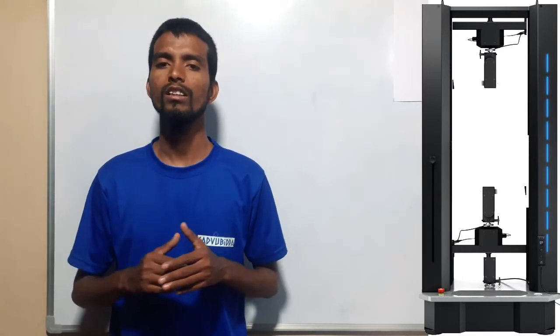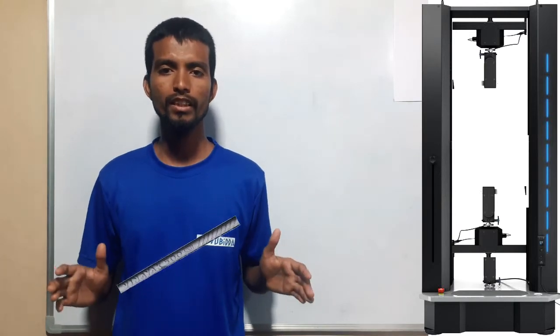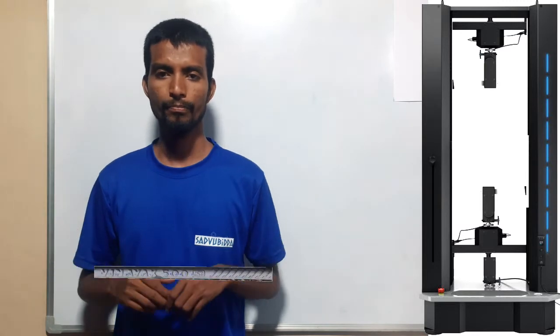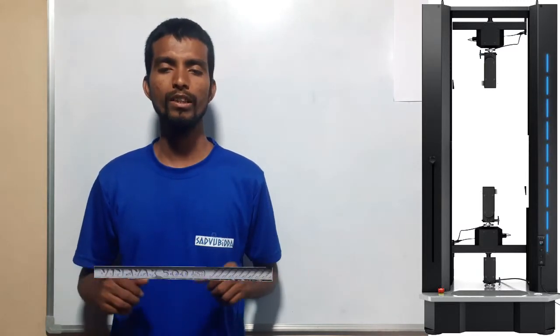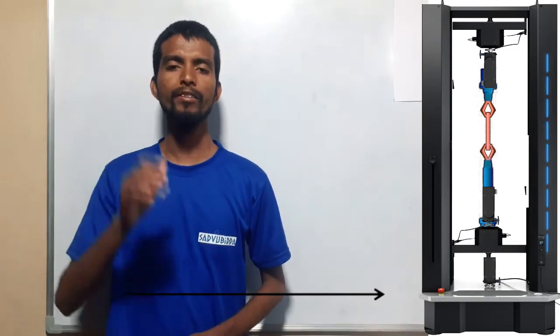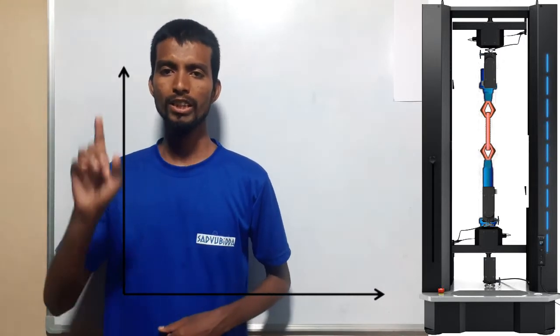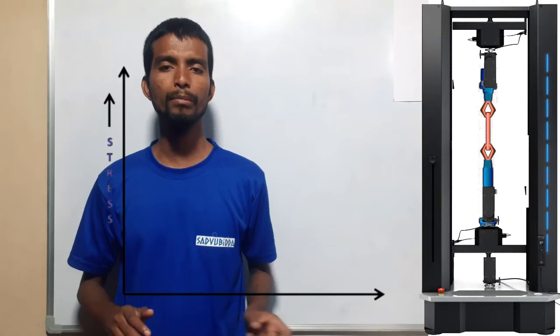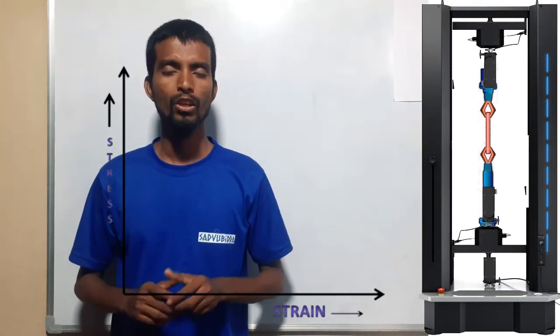Let us consider a mild steel rod of certain length L. We are going to draw a stress-strain curve for this mild steel rod. We have to keep this rod into the chucks of the UTM machine. Let us consider an X-Y plane. Let stress be on the Y-axis and strain be on the X-axis.